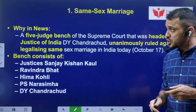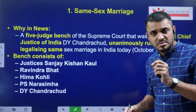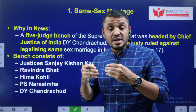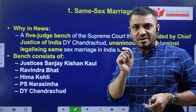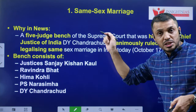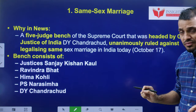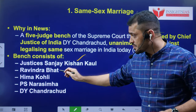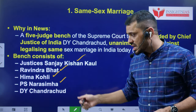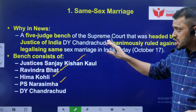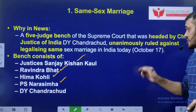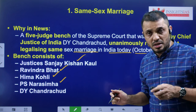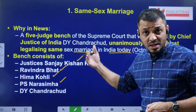It is in the news because a five-judge bench — always remember, a constitutional bench of five judges is appointed by the CJI whenever interpretation of the Constitution is required. This particular five-judge bench consists of honorable CJI D.Y. Chandrachud and honorable Justices Sanjay Kishan Kaul, Ravindra Bhat, Hima Kohli, and P.S. Narasimha. This bench clearly stated that the Supreme Court is against legalizing same-sex marriage in India.